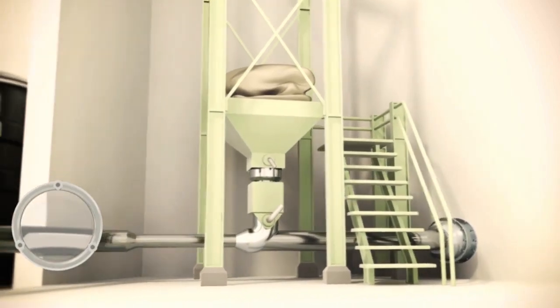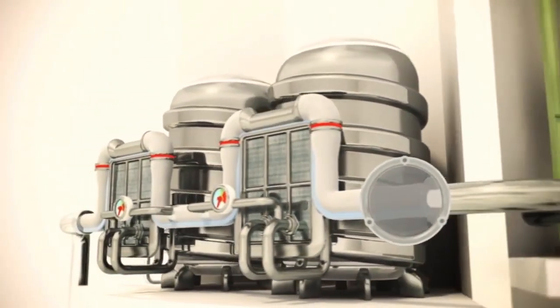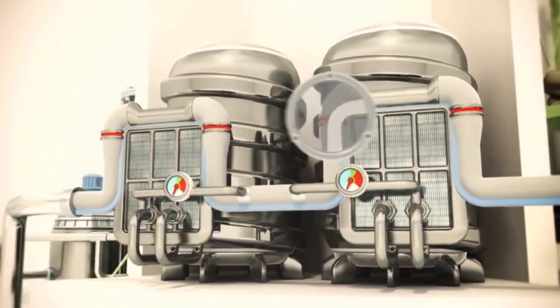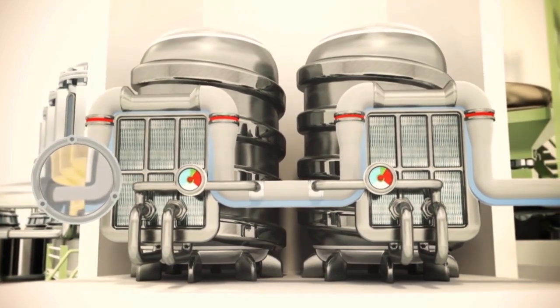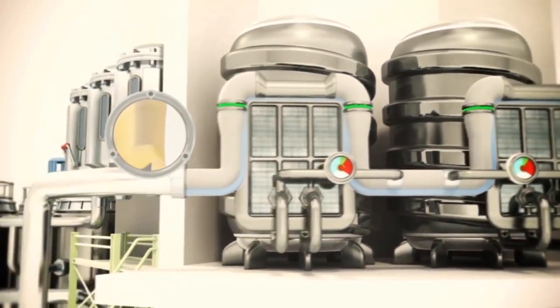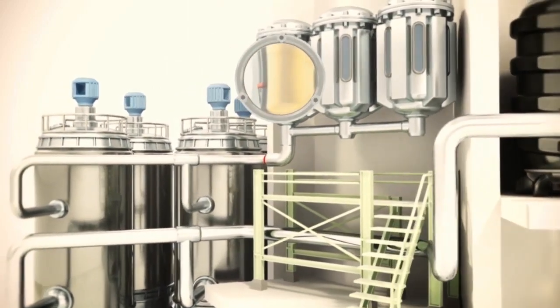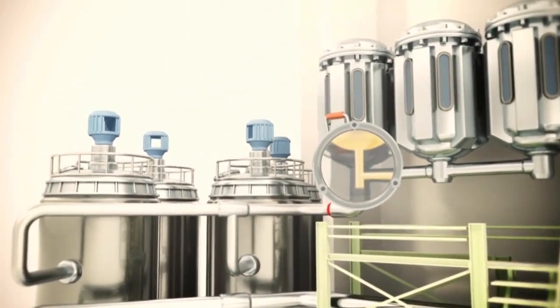The production process starts with dissolving the basic ingredients, skimmed milk powder and water. This solution is then sterilized using an ultra-heat sterilizer. This means that the mixture is heated to a very high temperature to kill any unwanted bacteria.